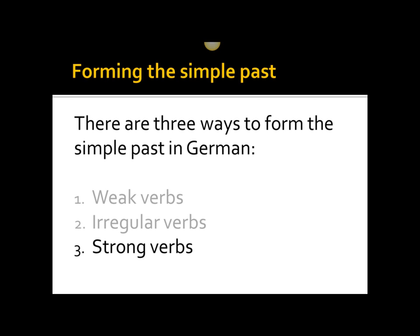There are basically three ways to form the simple past in German: weak verbs, irregular verbs, and strong verbs. Today we're going to be looking just at strong verbs. If you have questions about how to form the simple past with weak or irregular verbs, I refer you to the other videos on our YouTube channel.